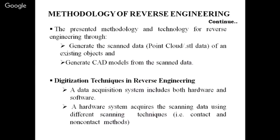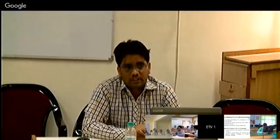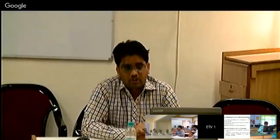The basic methodology of reverse engineering is completed in two ways: first, how to generate the point cloud data, scan data, or STL data; and second, how to generate the valid 3D model from the scanning data. Digitization in reverse engineering includes both hardware and software — hardware involves scanning techniques like contact or non-contact methods, and software handles the scan data in point cloud or STL format.